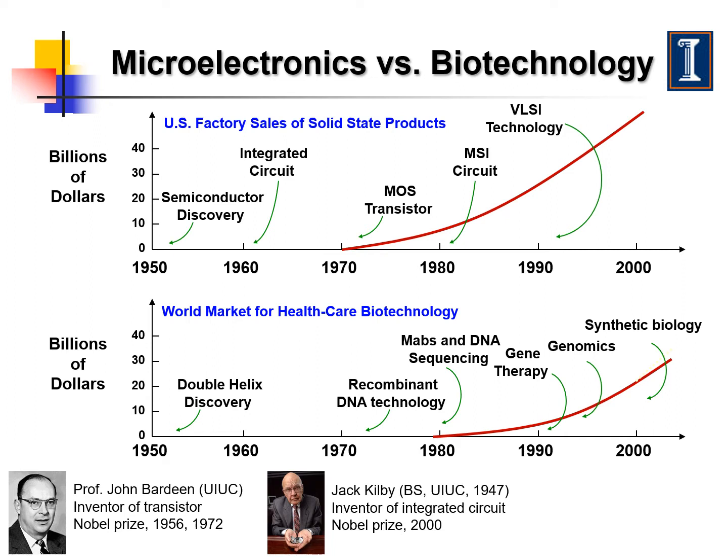Modern biotechnology has made a huge impact on society in the past 50 years. Its most important scientific discovery was made in the early 1950s, which is the discovery of the double-stranded DNA helical structure. Its most important technology was developed in the early 1970s, which is the recombinant DNA technology. The biotech industry has been growing very rapidly since the early 1980s.